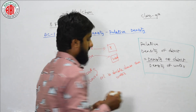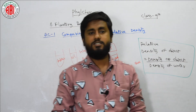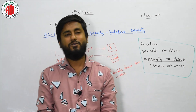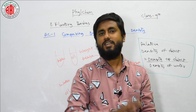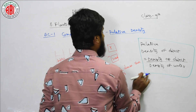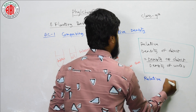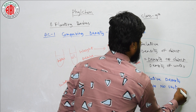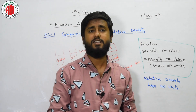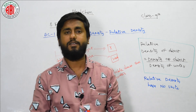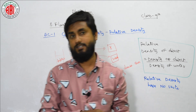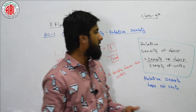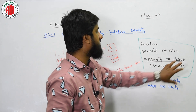So the definition of relative density: if asked in one mark, write — relative density of an object is equal to the density of the object divided by the density of water. One more thing: relative density has no units. Just like the refractive index from chapter 4 on refraction of light had no unit, relative density also has no unit.